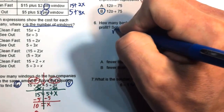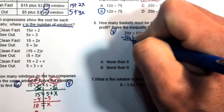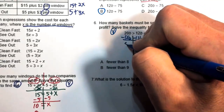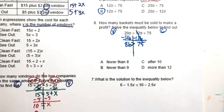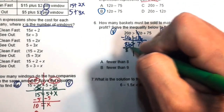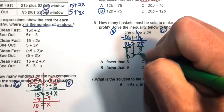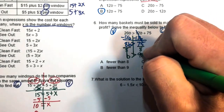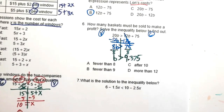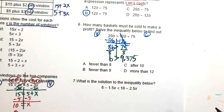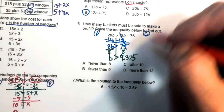Subtract 12b from both sides: 20b minus 12b is 8b, greater than 75. Divide both sides by 8: b is greater than 9.375. Since you can't sell 0.375 of a basket, we round up to the next whole number, which is 10. Lon will need to sell at least 10 baskets to begin earning a profit.